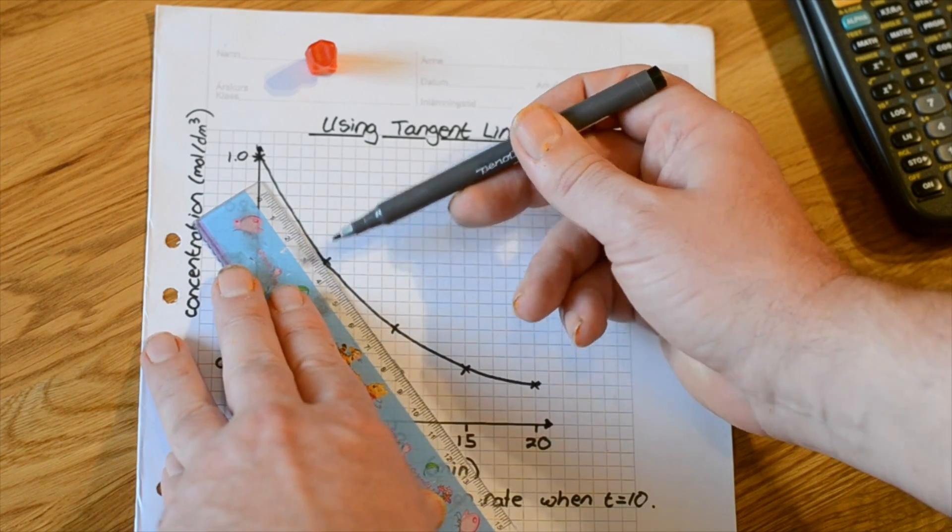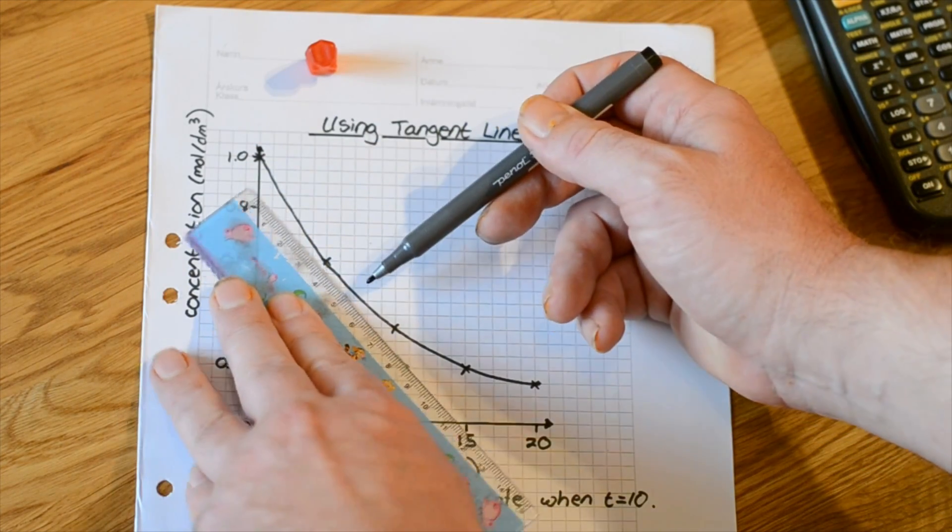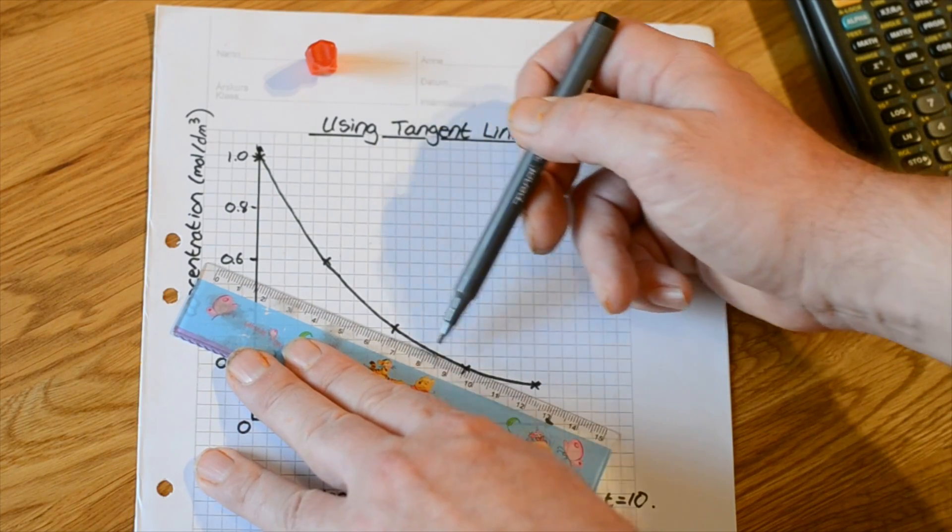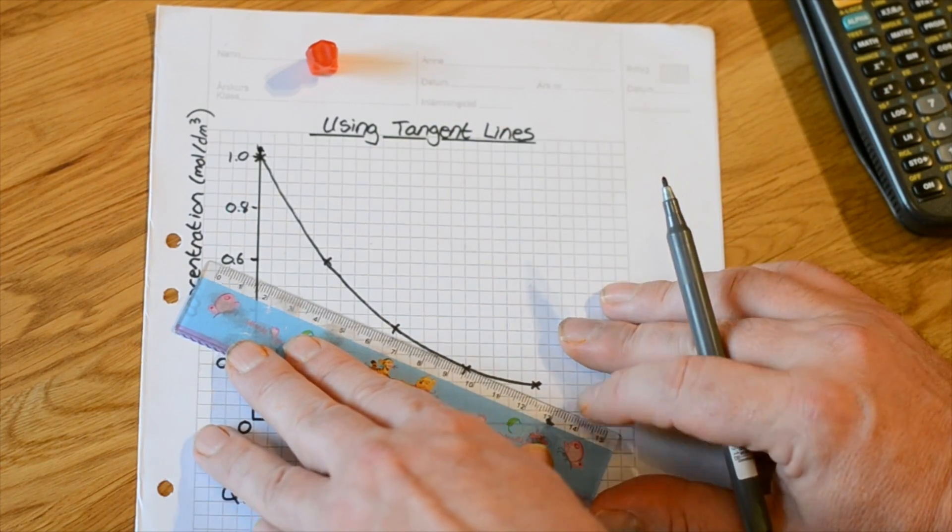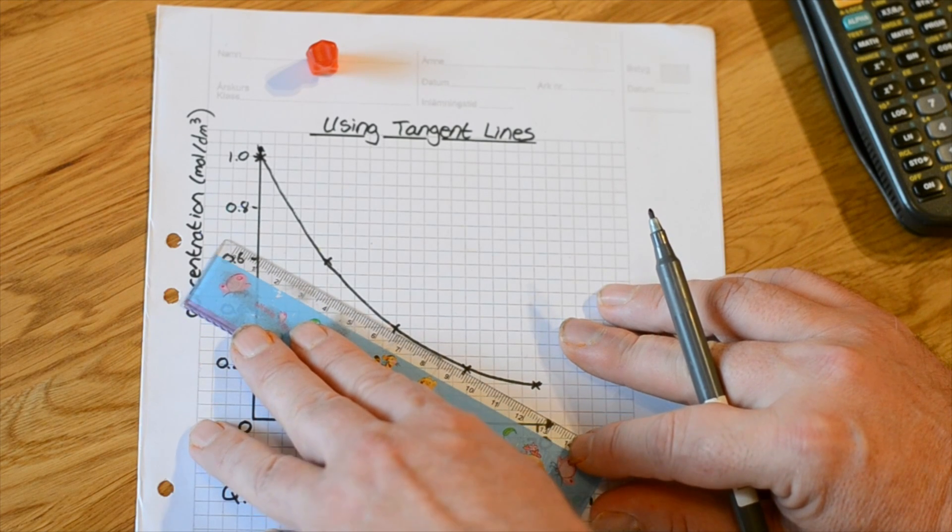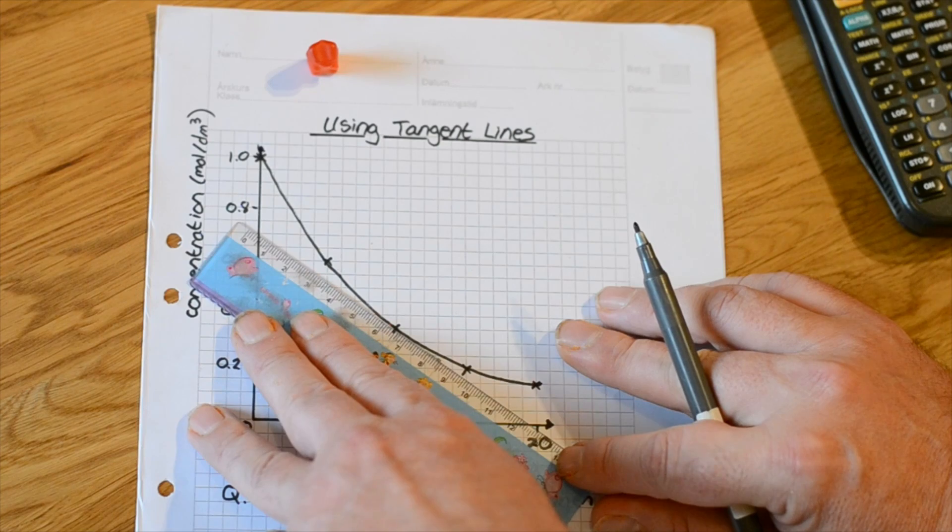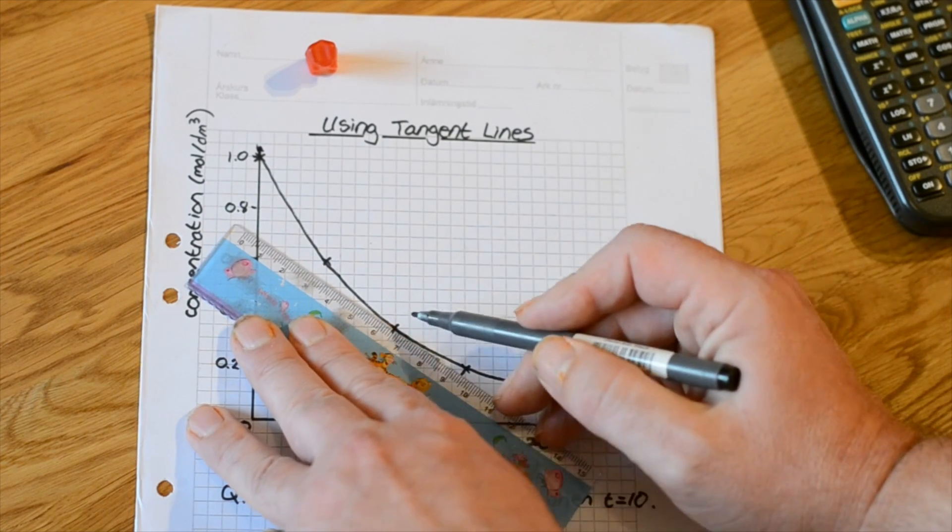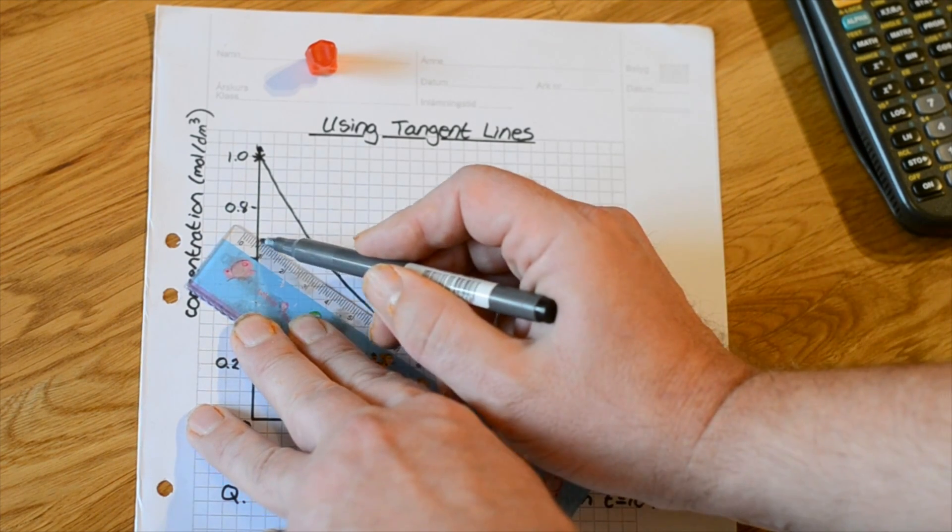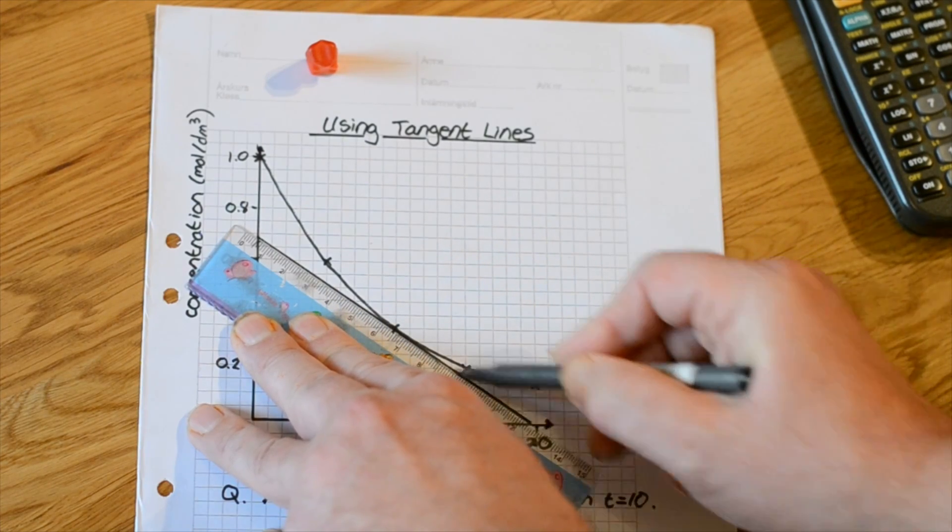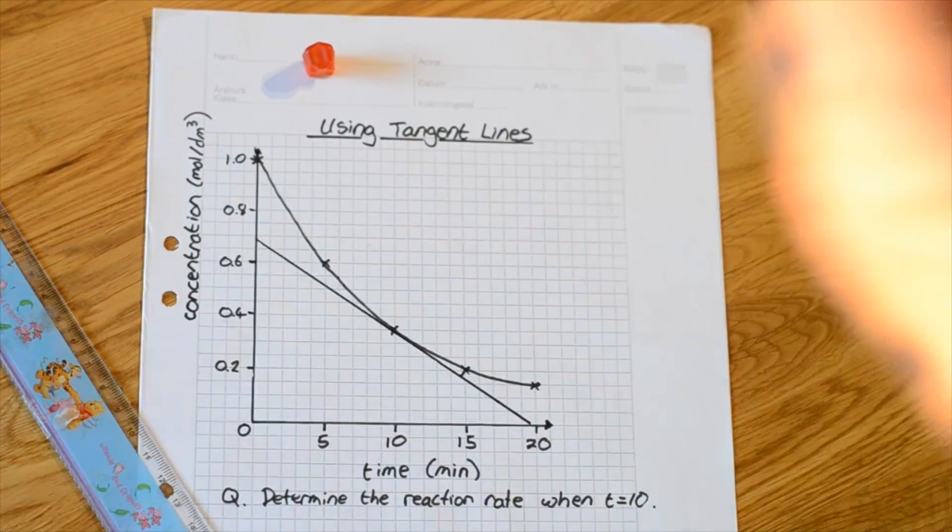you can notice the point at which it's going to touch the curve moves as I change the gradient. Here the gradient will be higher because the gradient of the curve in this region is higher. Here the gradient will be lower because the gradient of the curve is lower in this point. So I wiggle my ruler around keeping it close to the curve until it perfectly touches just at the point I'm interested in. And I can draw my straight line. This is my tangent line.